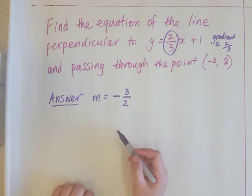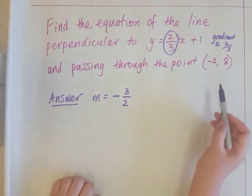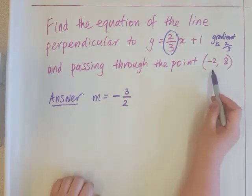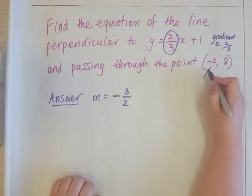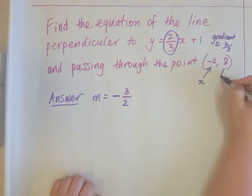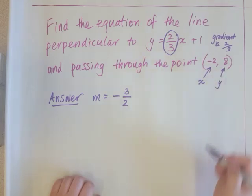From here the steps are the same as in the previous video. You have the point negative two, eight. So the x value will be negative two. The y value will be eight.